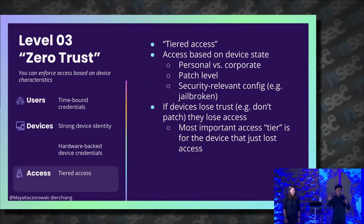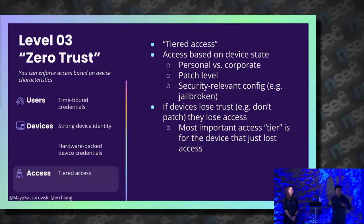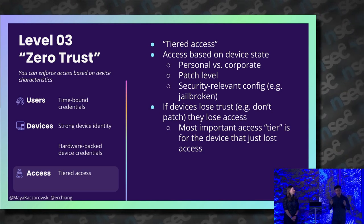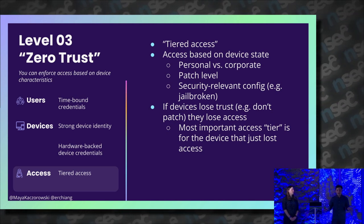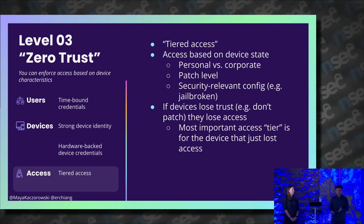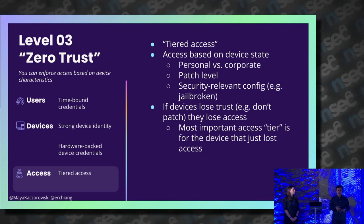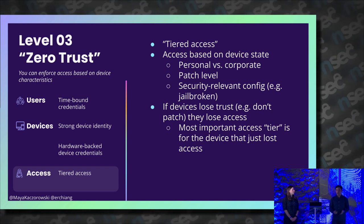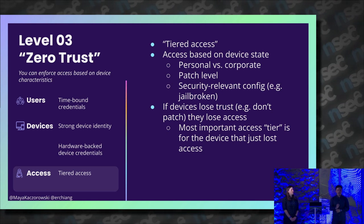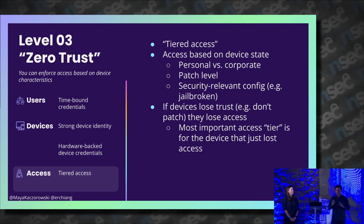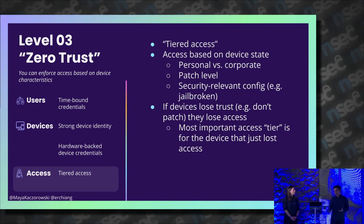Finally, we'll talk about access and Google's concept of tiered access. We've talked about personal versus corporate, but beyond that we talk about device tiers. What about the patch level of that corporate device, or other security-relevant configuration? If it hasn't taken up the things we've prescribed, do we want to continue to allow it access? When we talk about tiered access, we talk about devices losing trust — a corporate device that should have access, but doesn't because it hasn't done something we require, like patching recently. Critically, the most important tier is the one your devices get placed in when they lose access. If they suddenly lose access and the user has no way of regaining it, that's an extremely bad user experience.